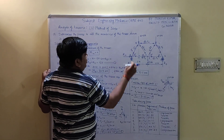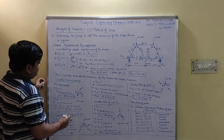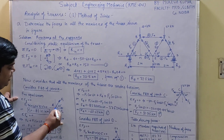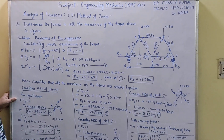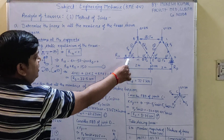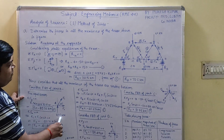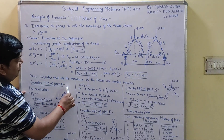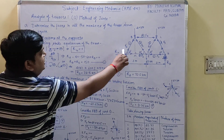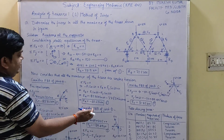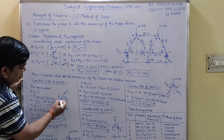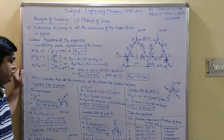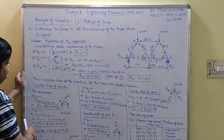We are drawing the free body diagram of joint A. Mark a point A and draw horizontal or vertical axes, then show the forces acting at that point: RA in the vertical upward direction, which is 72.5 kN (already solved); F1 at an angle of 60 degrees from the horizontal; and F2 in the horizontal direction. As you can see, this is a concurrent force system, and to solve a concurrent force system we need to use two equilibrium equations.